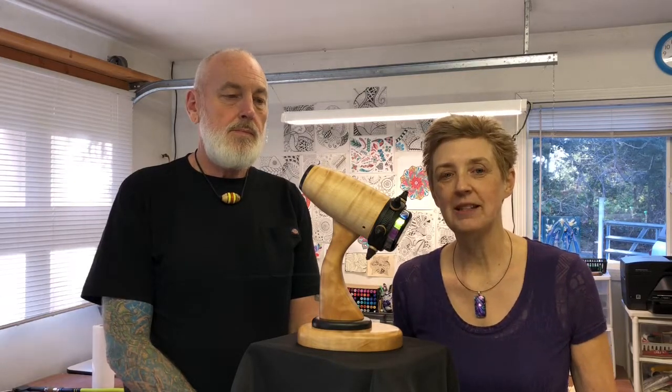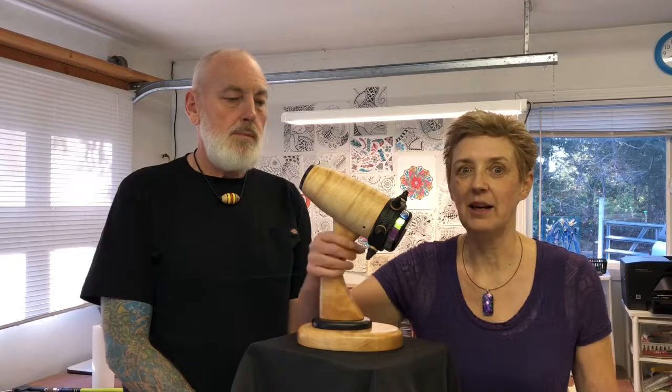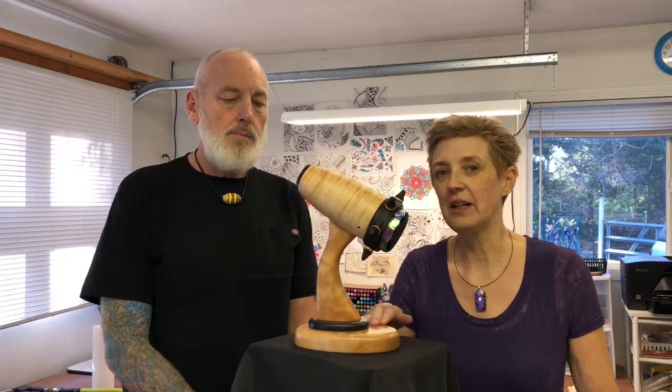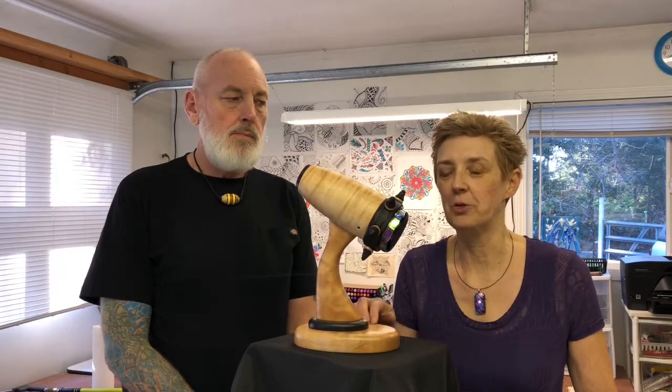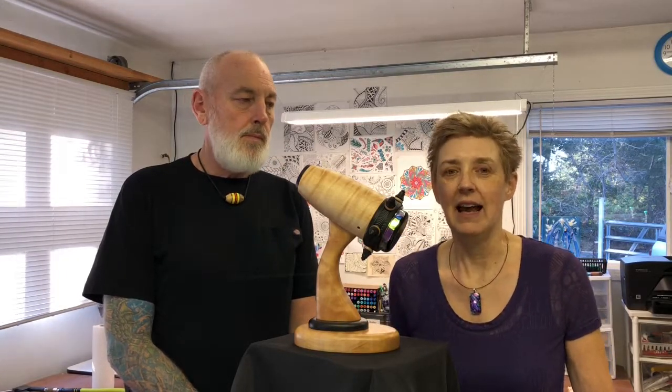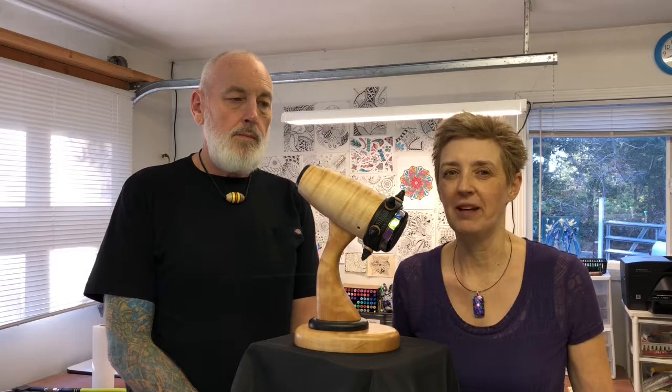It's an open numbered edition and this is number 11. They are all signed and dated on the bottom of the scope. The wood we chose for this scope is Oregon bigleaf maple, highly figured wood, and the accent wood is ebony. I'm going to let Randy tell you a little bit more about the scope.